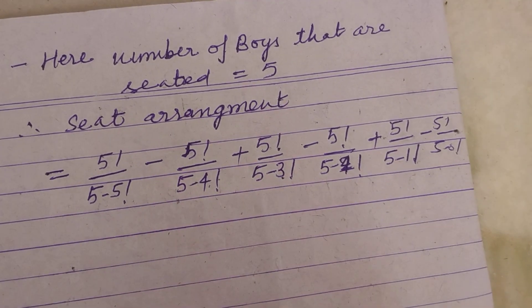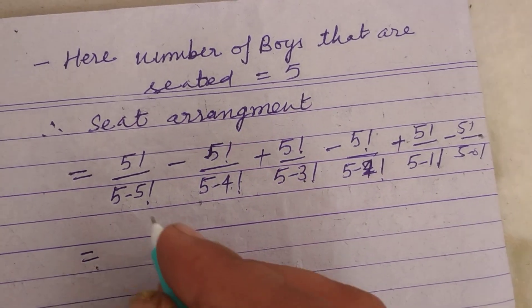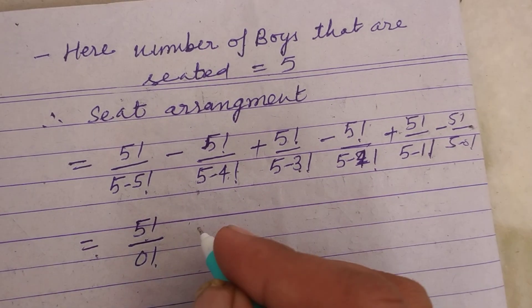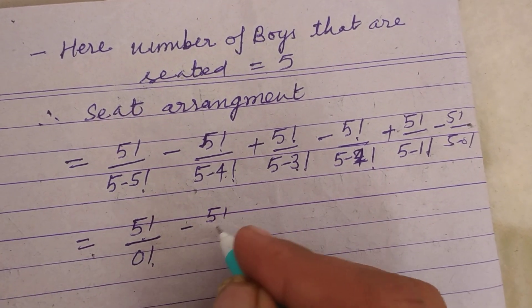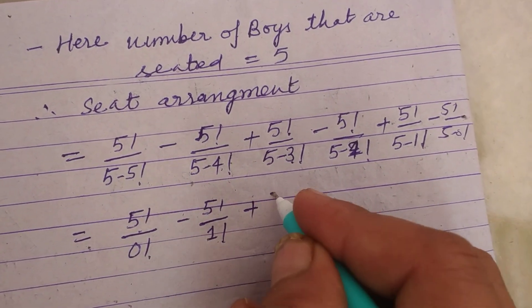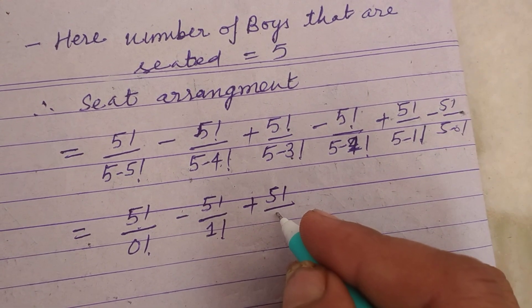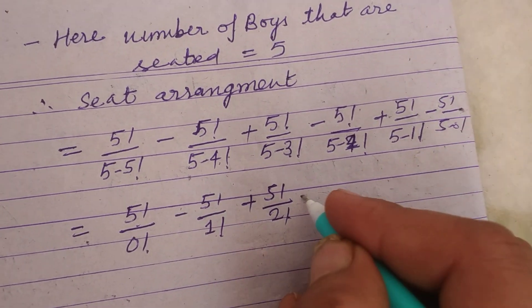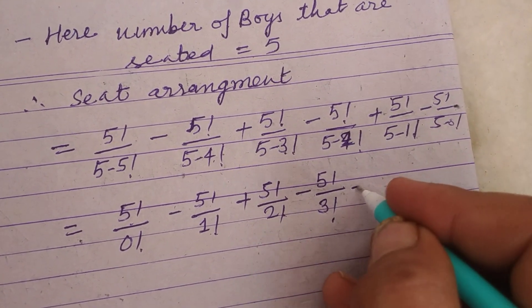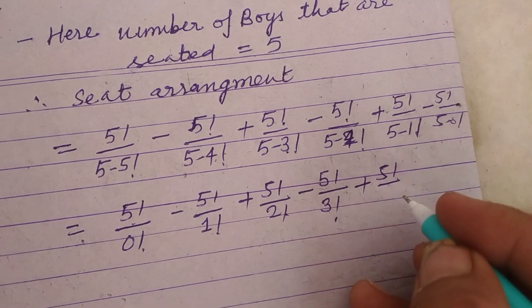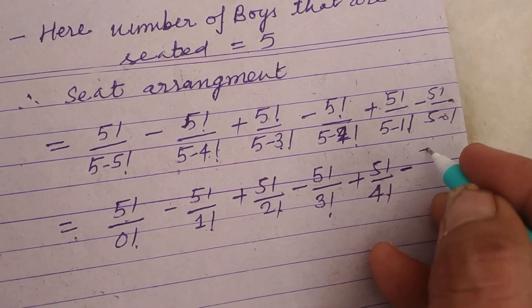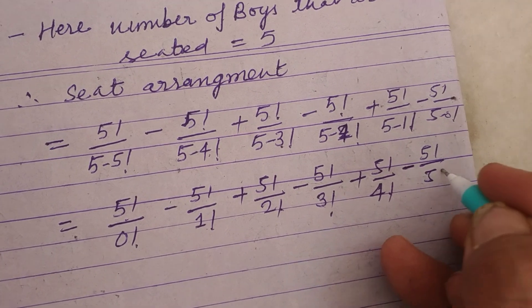So this will be 5! / 0! minus 5! / 1! plus 5! / 2! minus 5! / 3! plus 5! / 4! minus 5! / 5!.